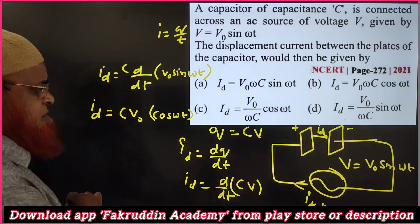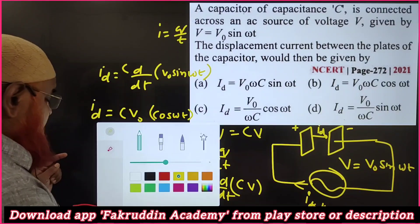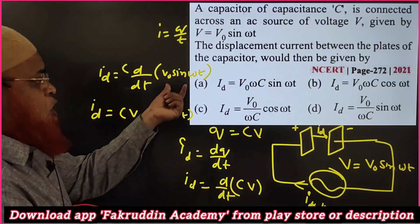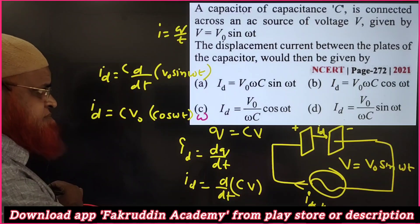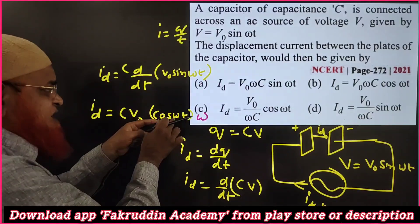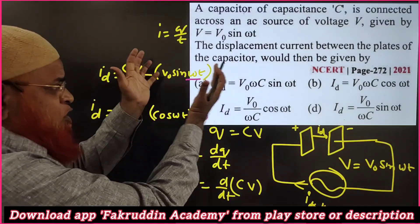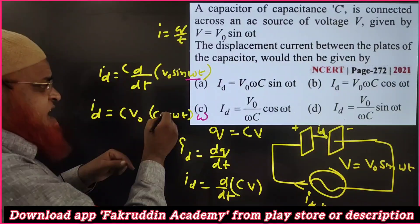And you have to once again differentiate ωt. You will get omega. So sin ωt means cos ωt. Inside, ωt is present. If you differentiate ωt once again with respect to time...